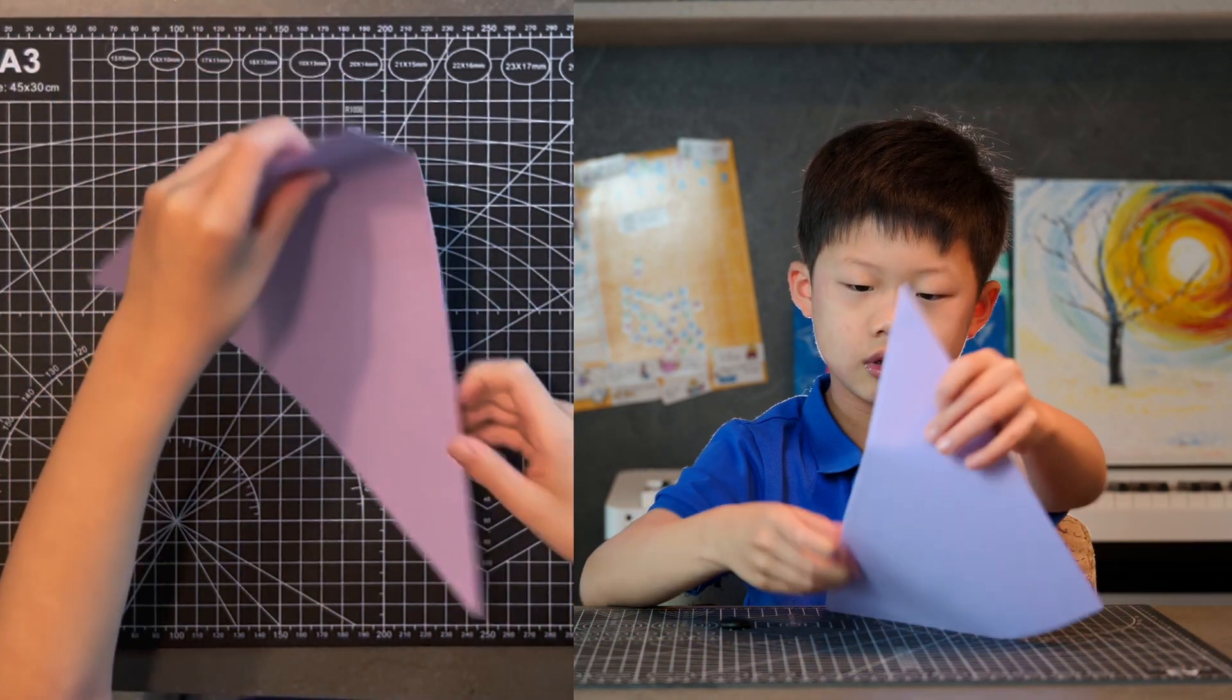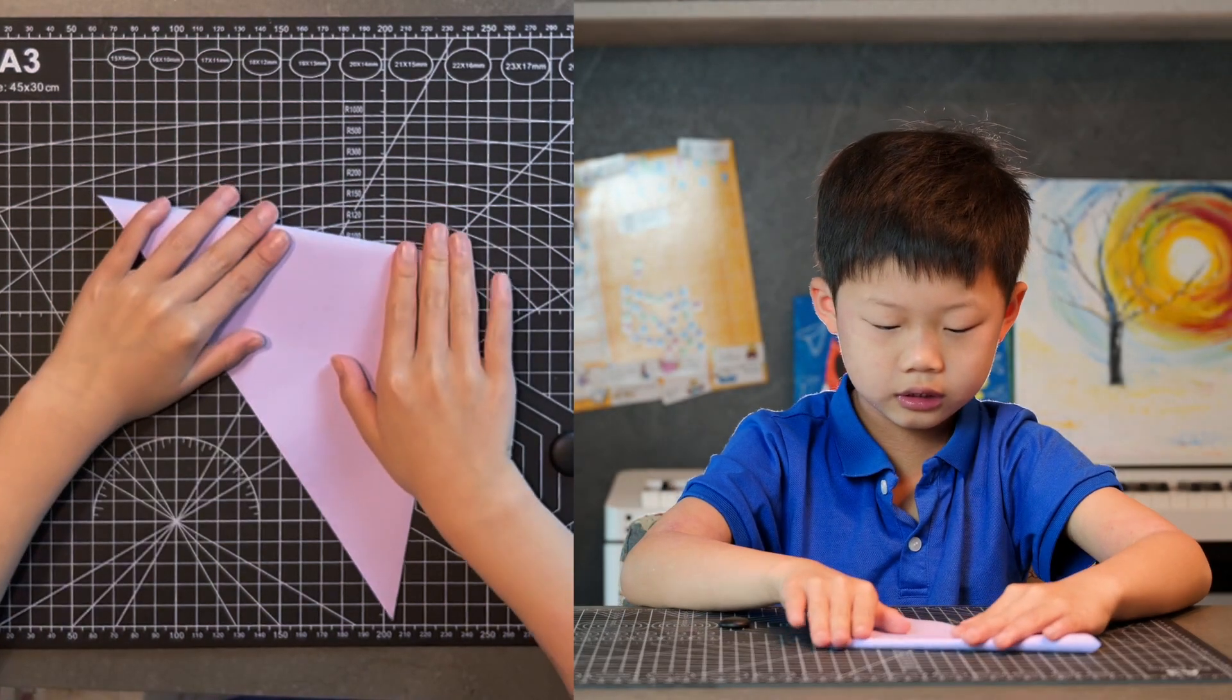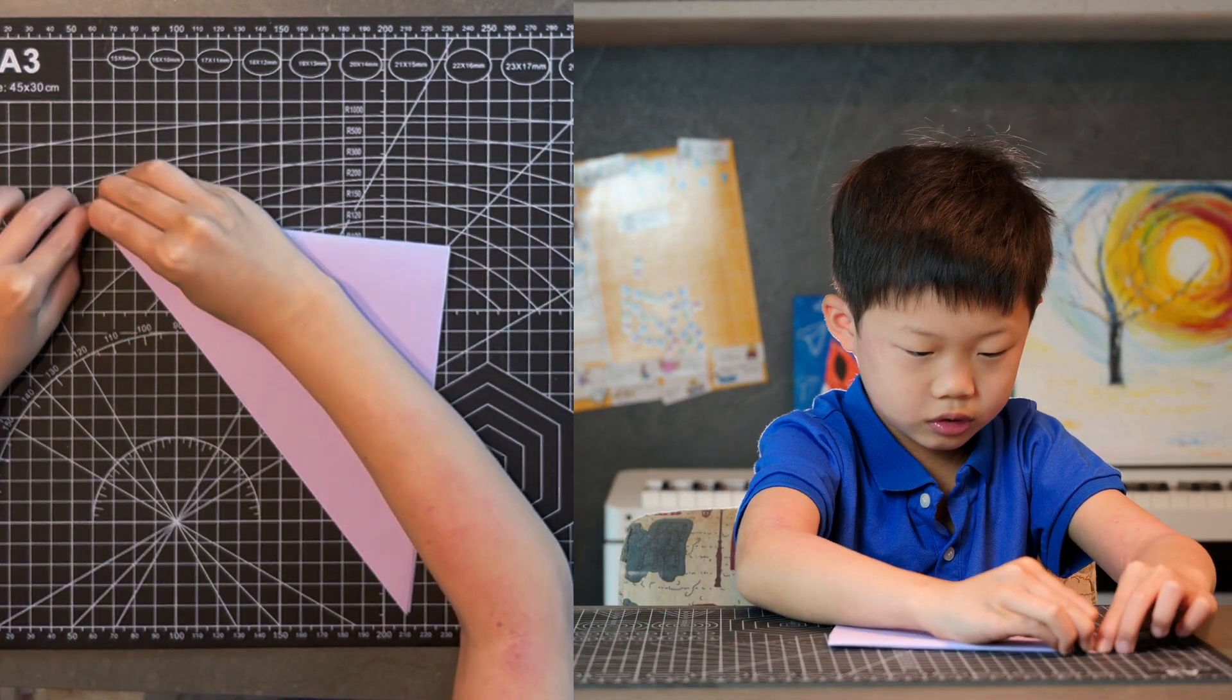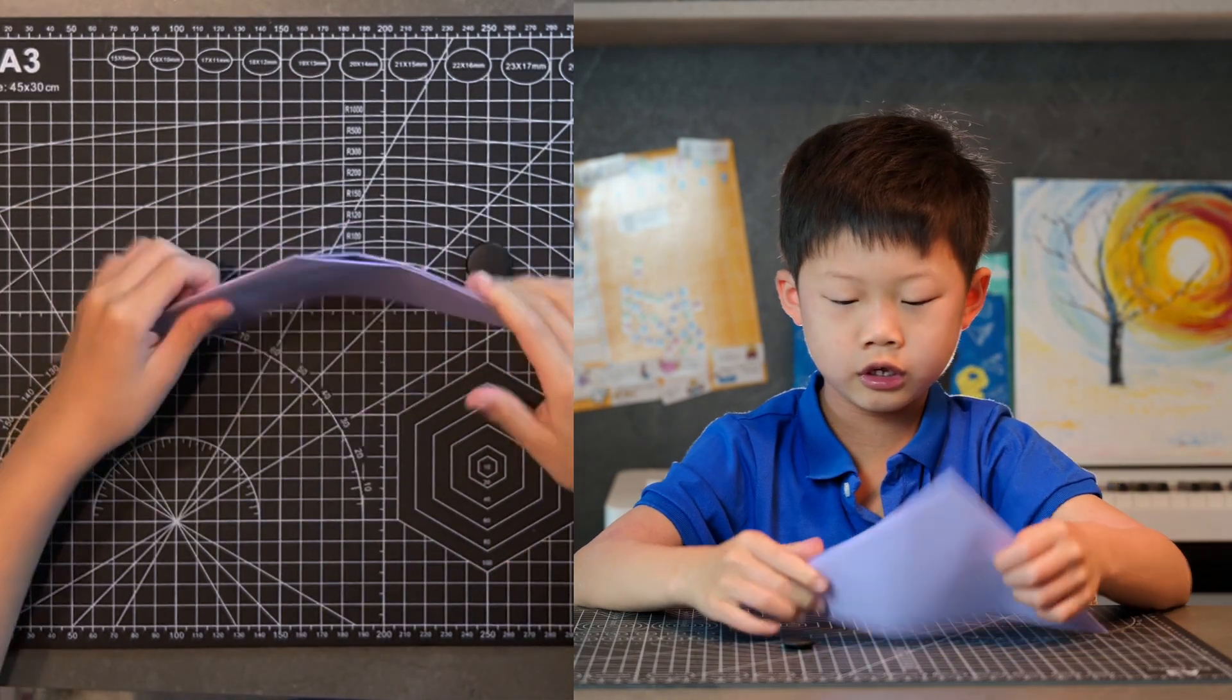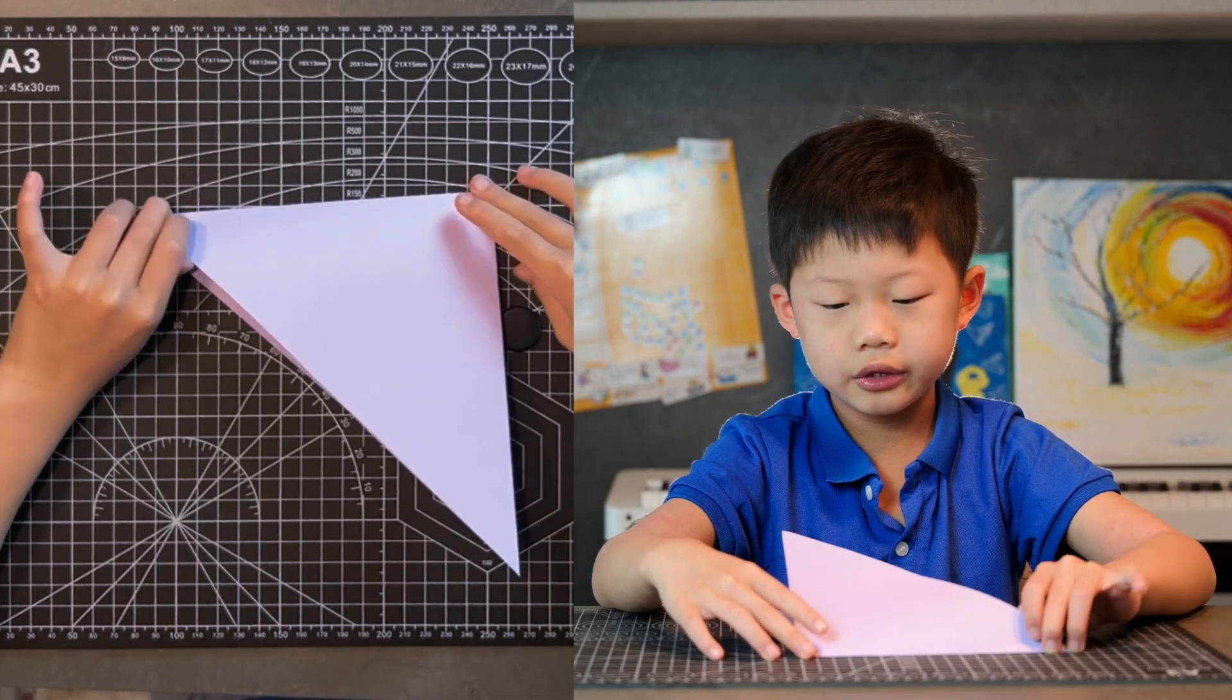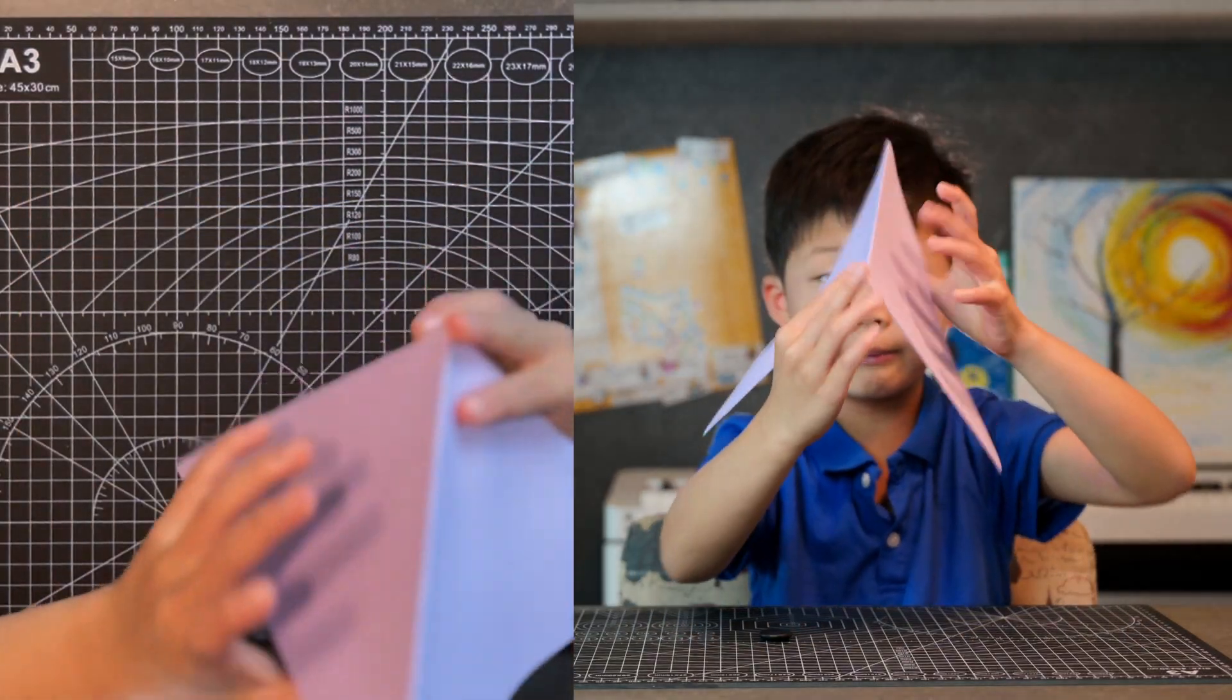And then fold it like this. So just basically just make a smaller triangle. And then open it up so it's a mountain crease.